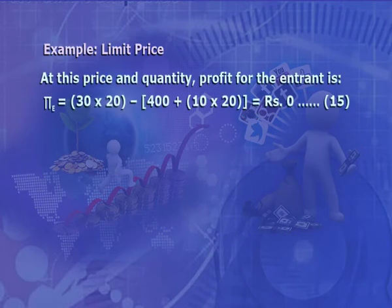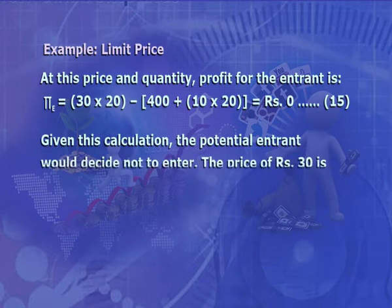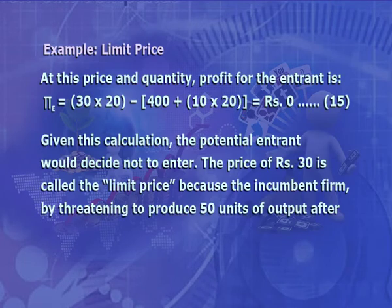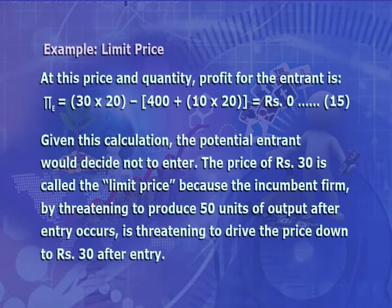At this price and quantity, profit for the entrant is: π_e = 30 × 20 − (400 + 10 × 20) = 0 (equation 15). Given this calculation, the potential entrant would decide not to enter. The price of Rs. 30 is called the limit price because the incumbent firm, by threatening to produce 50 units of output after entry occurs, is threatening to drive the price down to Rs. 30. The incumbent firm sets the price so that the profit of the potential entrant becomes zero if it enters, hence there is no potential entry. This price is known as the limit price.